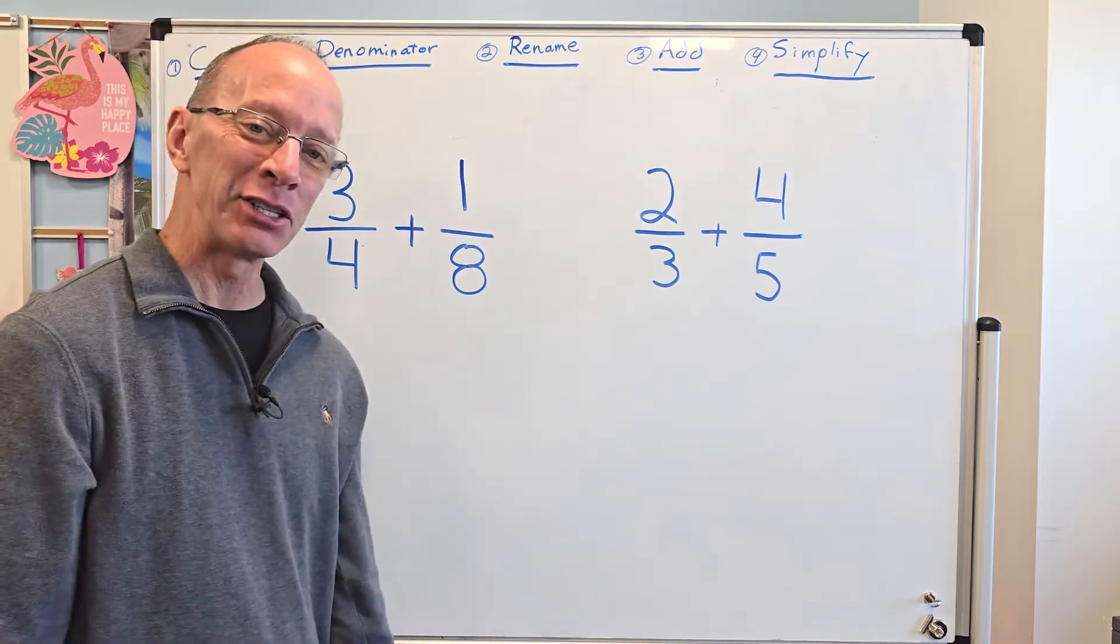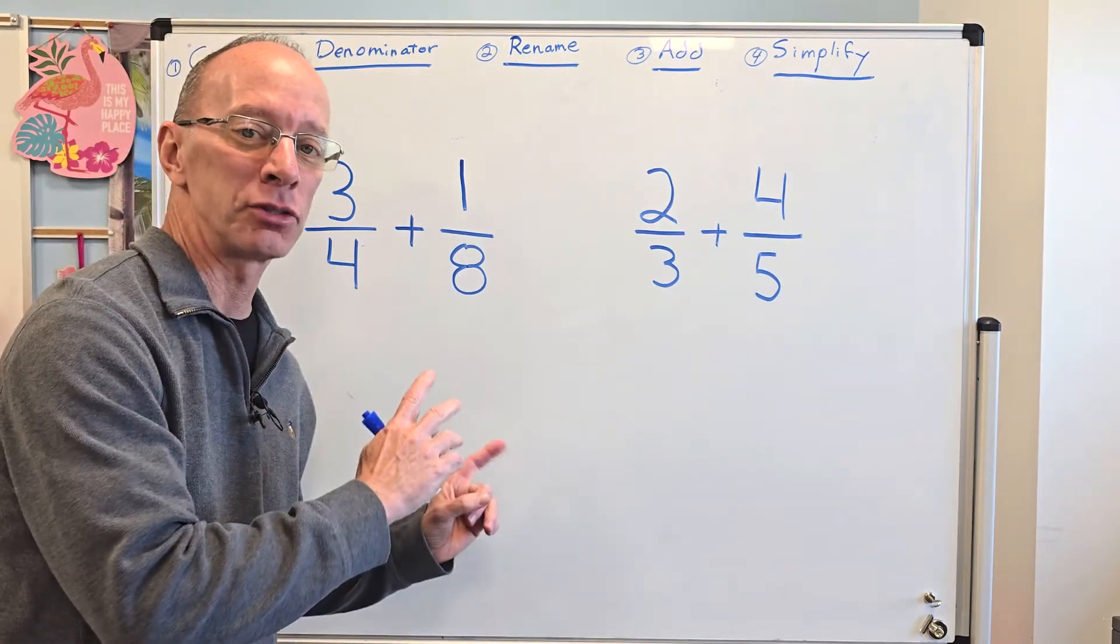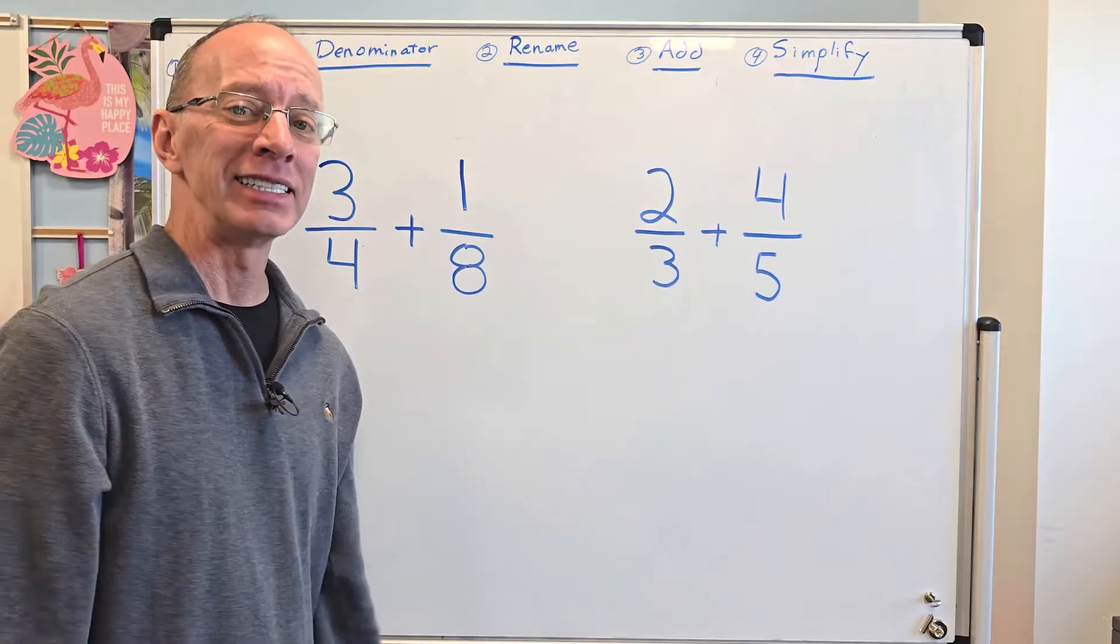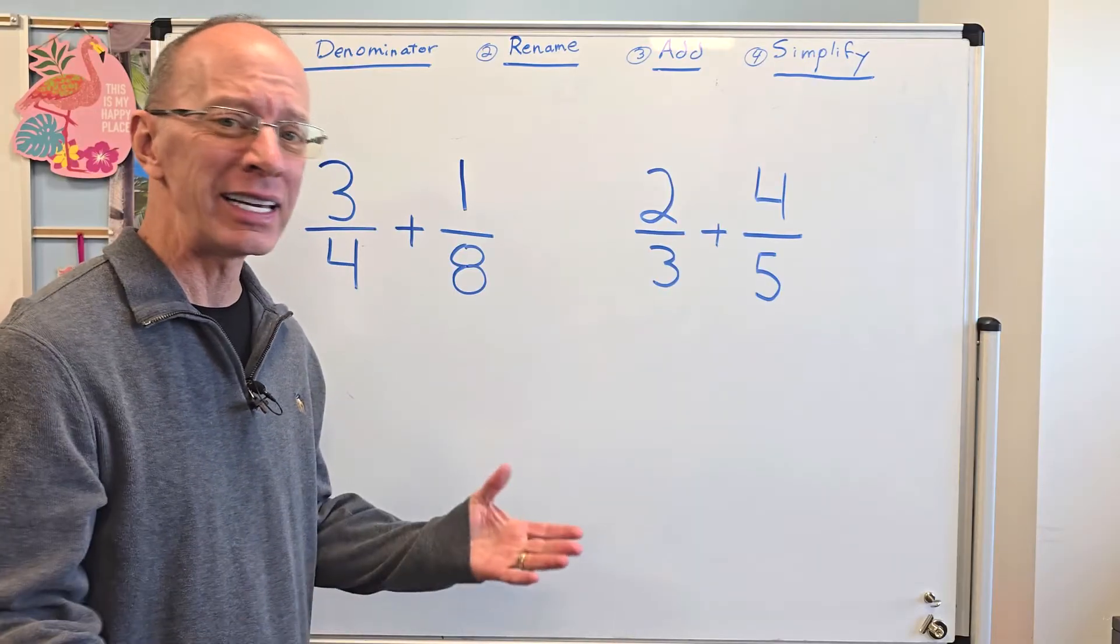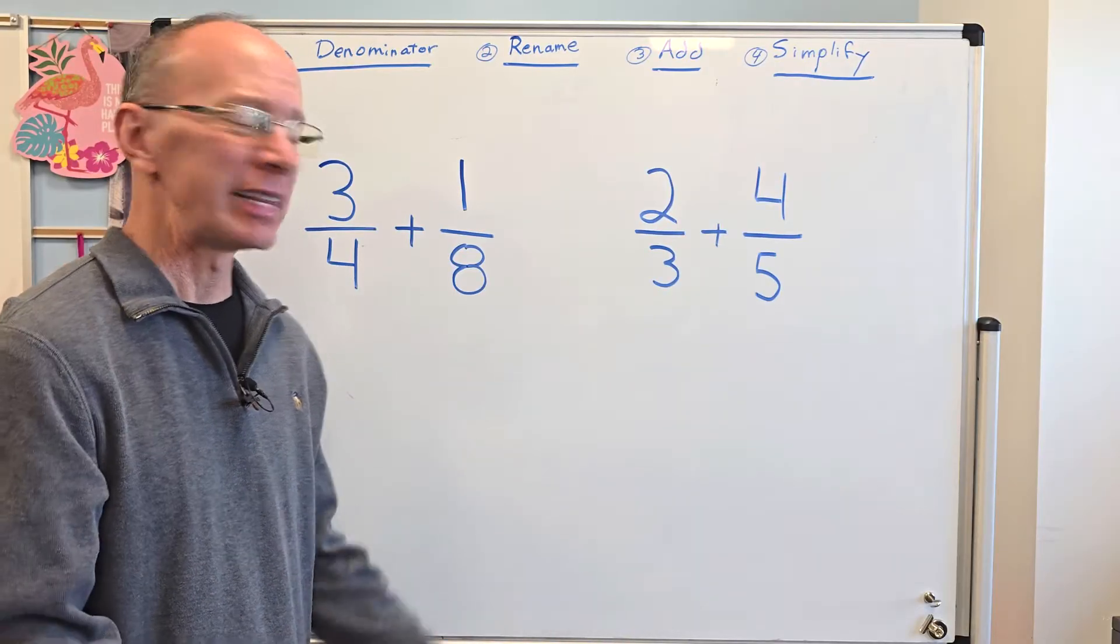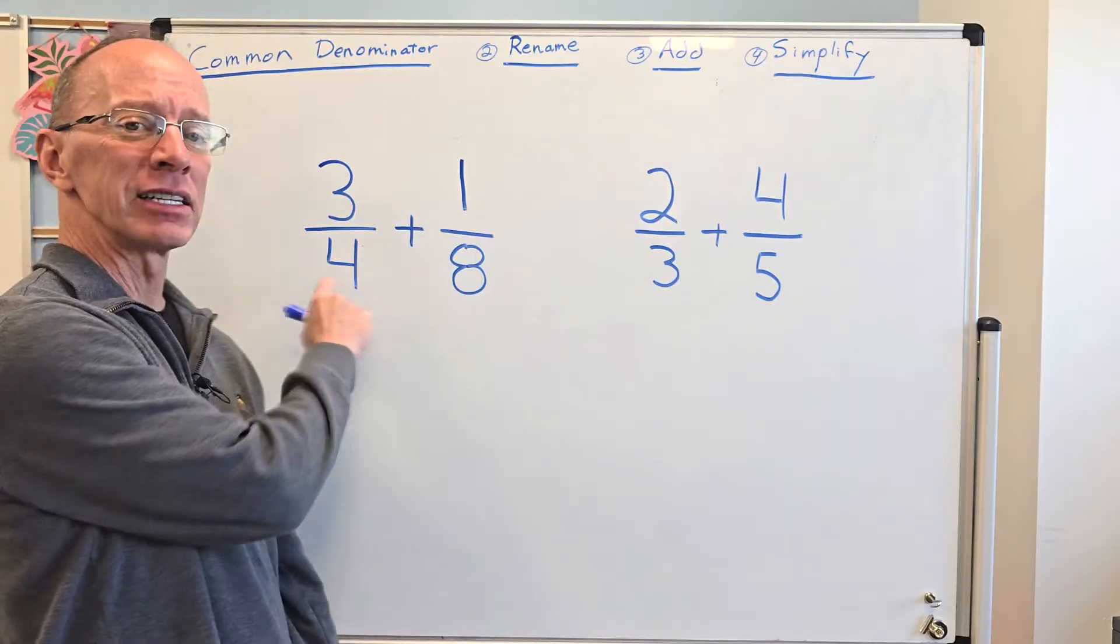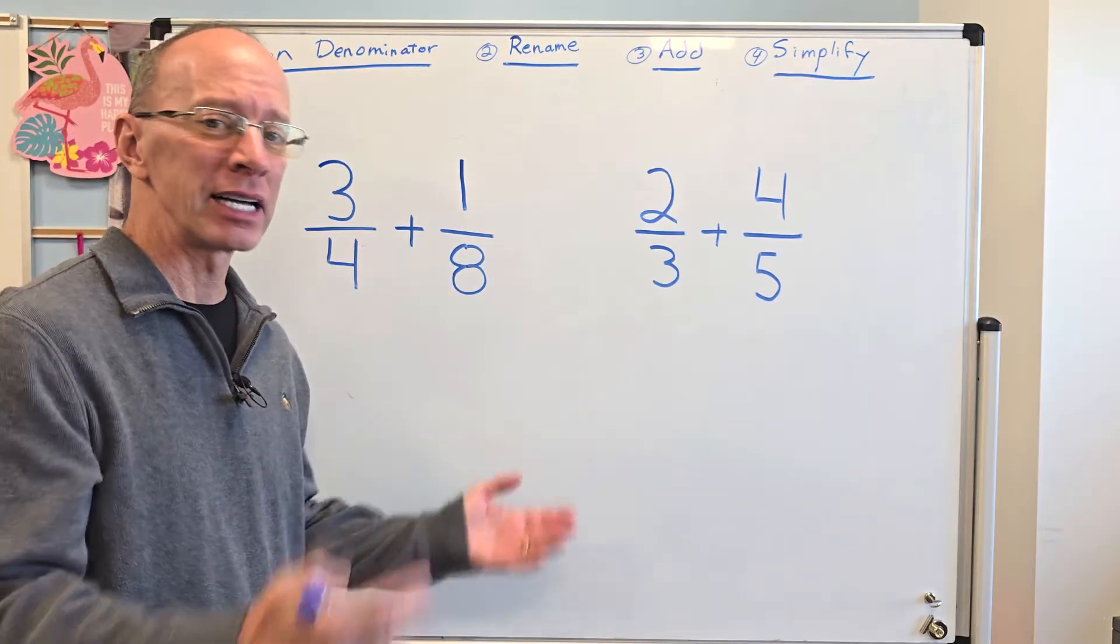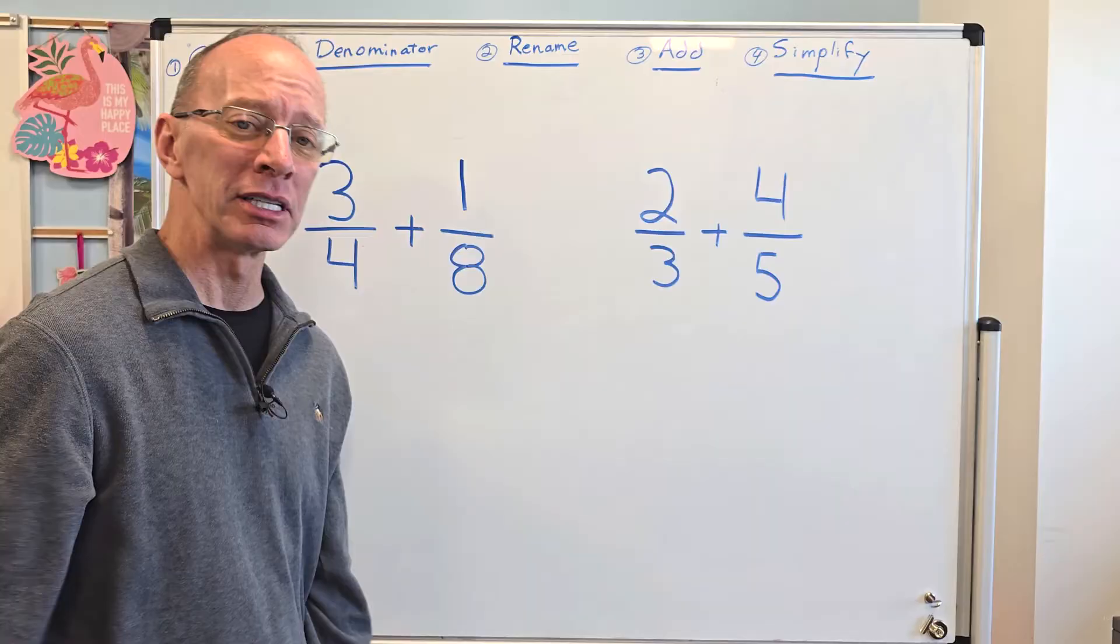Hey, welcome to the show. Today we're going to be adding fractions with unlike denominators. You're like, what is an unlike denominator? That means that this number here on the bottom, they don't match up. They're not the same. We need to make them the same.